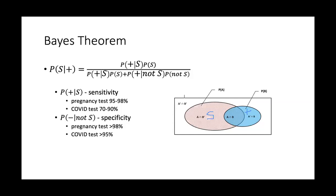This is where Bayes' theorem comes in. How do I use the result of the positive or negative test? It starts with your prior probability — the probability before you take any tests that you have the condition. That's sometimes called the prior probability, namely what you think or believe prior to taking any test. This prior probability could be pretty high, for example if you have all the symptoms, then your prior probability could be 50% or more that you actually have the disease.